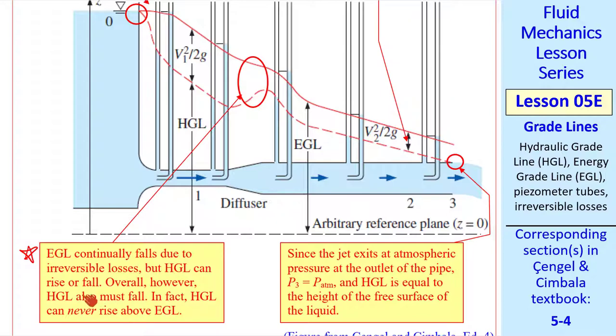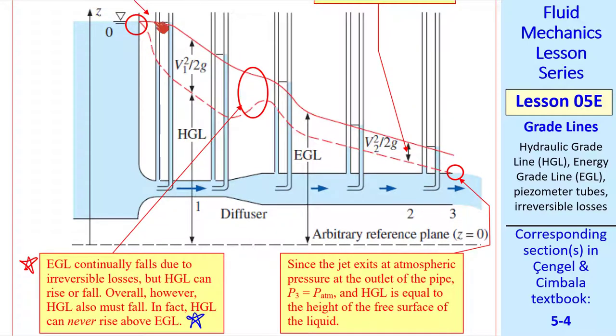Note that EGL continually falls. This is due to irreversible losses. HGL, on the other hand, can rise or fall. We see it falling and then rising and then falling again. Overall, however, it also falls. In fact, HGL can never rise above EGL, since EGL has that extra velocity term. Hopefully this helps you understand that irreversibilities cause both EGL and HGL to fall as we go through this pipe system. HGL can temporarily rise, but it still has to fall overall.